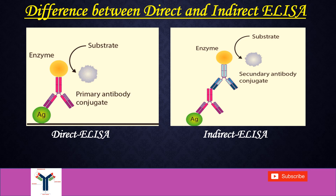Here we can see the clear cut difference between direct ELISA and indirect ELISA. In direct ELISA the antigen is detected by the primary antibody which is conjugated. Whereas in indirect ELISA, antigen binds to the specific antibody, and that specific primary antibody is bound by the secondary antibody which is conjugated. After adding the substrate it will give the colour reaction.